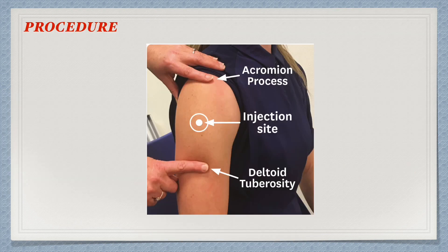Let's see the procedure. After checking the physician's order, arrange necessary articles and go to the patient's side. Explain the procedure to the patient and position the patient according to the site of injection. Here it is the deltoid site, so make the patient sit with elbows slightly flexed. Then inspect the area of injection and clean the area with antiseptic liquid. After that, hold the syringe between the thumb and forefinger in a pen-holding manner.